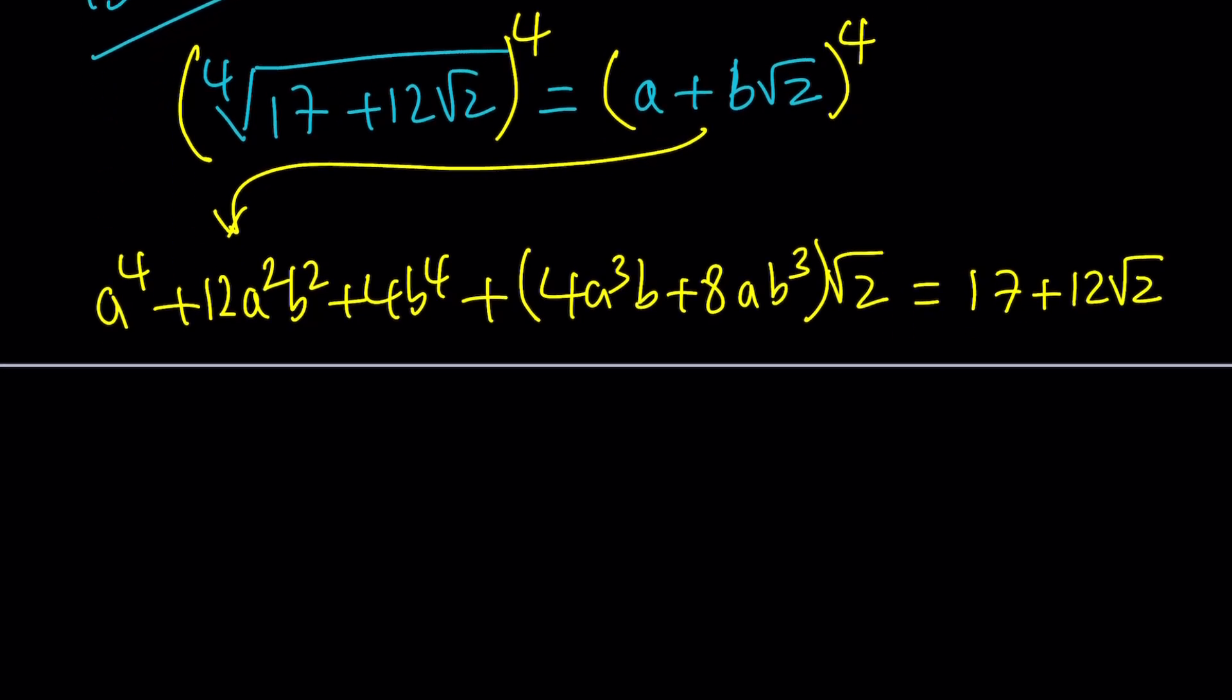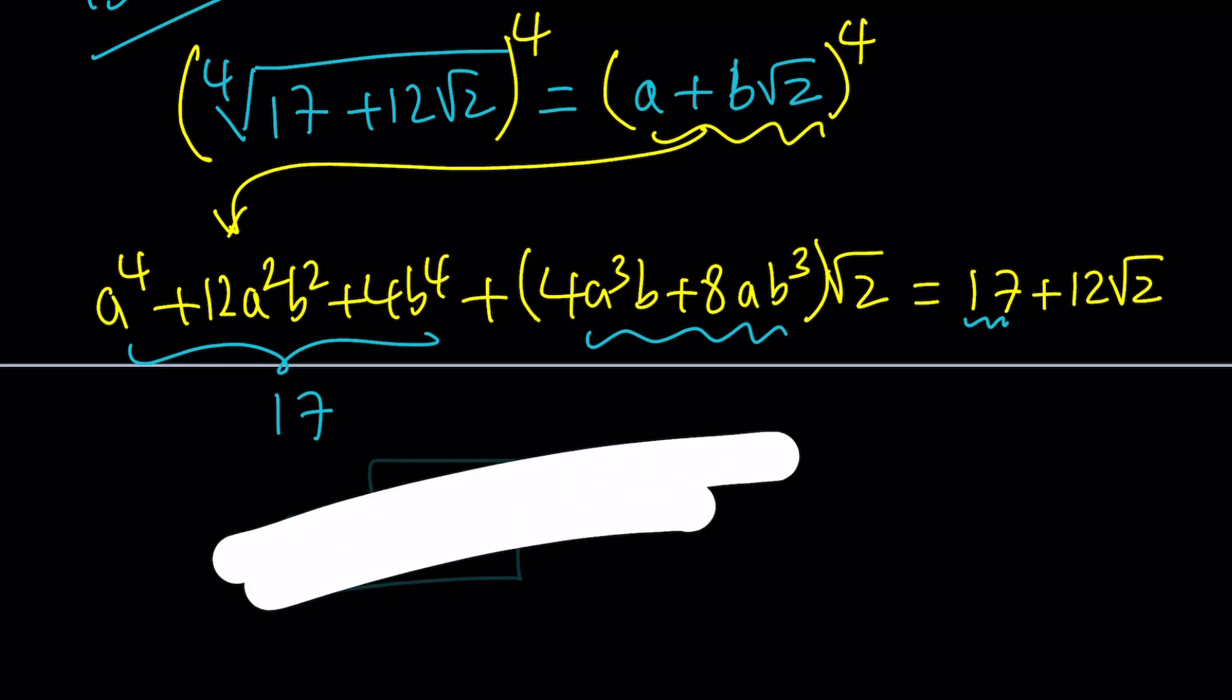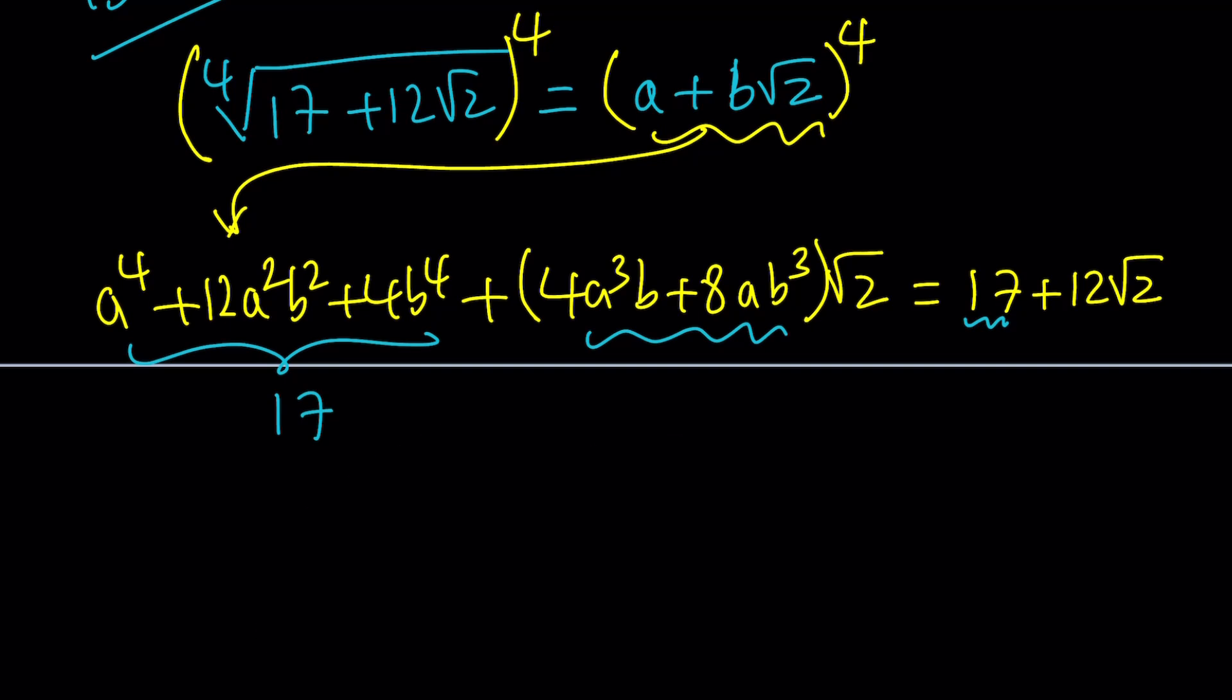What I did was, basically, I expanded this using the binomial theorem. Some terms have root 2, some terms don't, and then I put those together, separated into two groups. Now, here's what we're going to do. We're going to compare the constant part here and the coefficient of root 2, kind of like the complex world. When we have two complex numbers like a plus bi equals c plus di, we compare a to c and b to d, right? By the way, speaking of complex numbers, make sure to check out the channel a plus bi. Anyways, so from here, we get two equations.